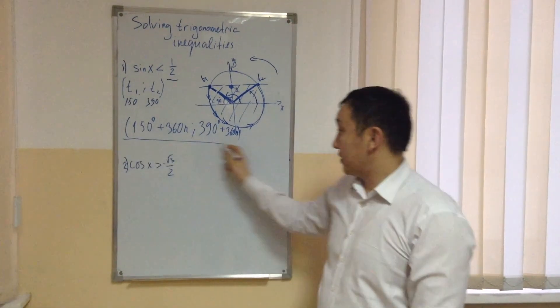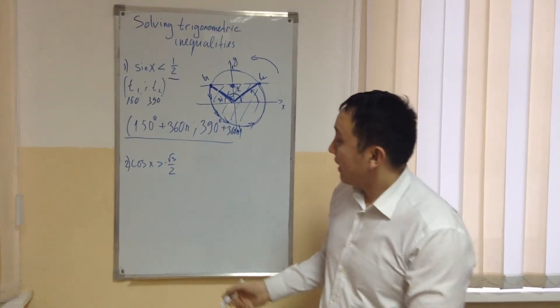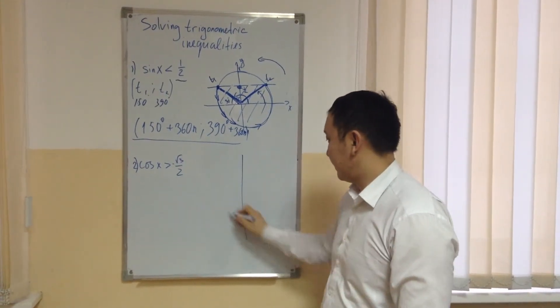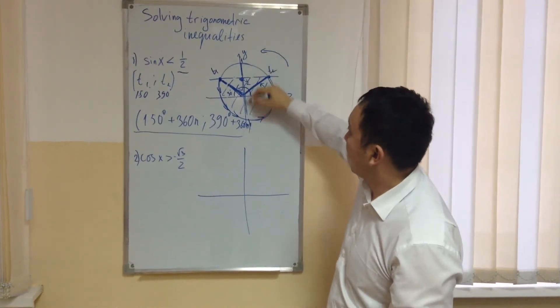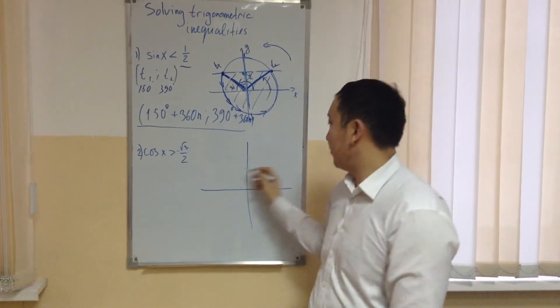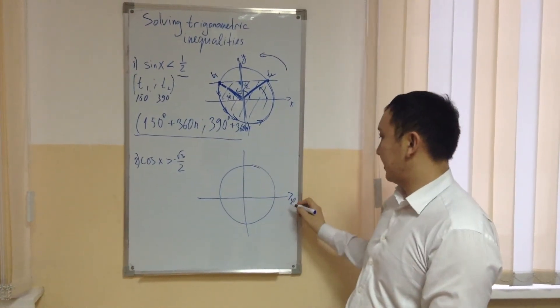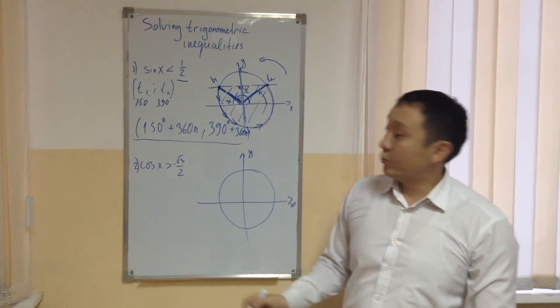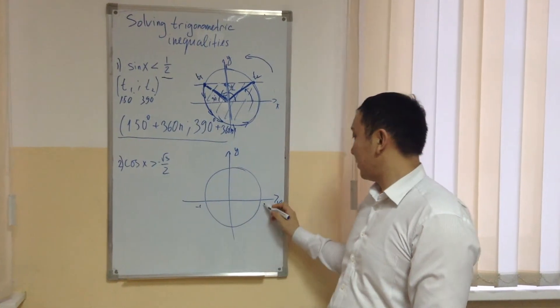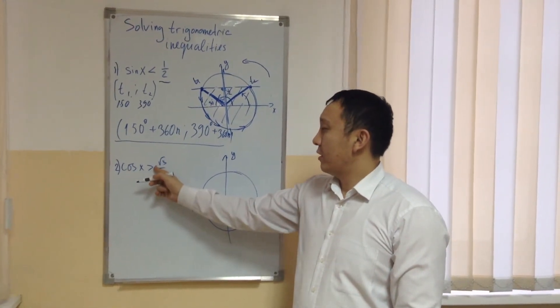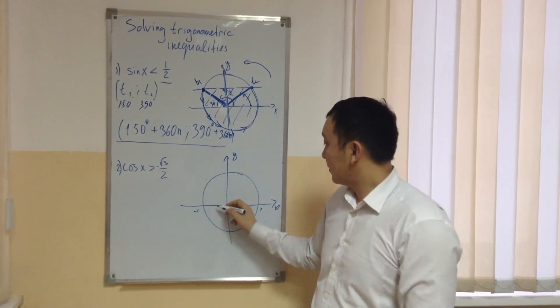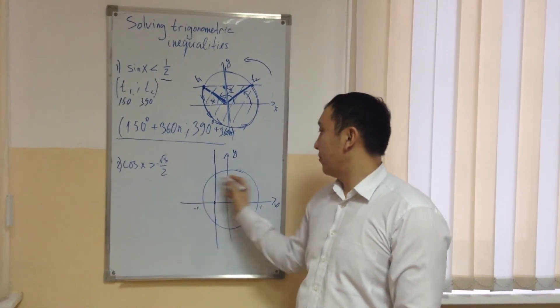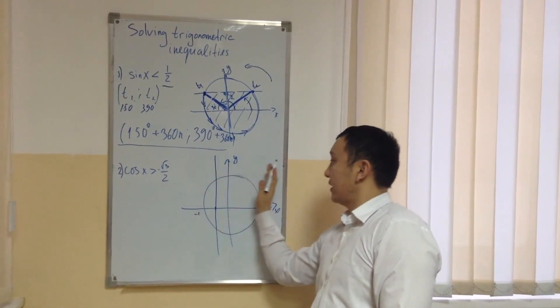So we finish with the task related with sin x. And the same I can say for cosine, with one difference, we have to change the axis. Before for sine we got the y axis as main, for cosine we have to choose x axis as the main axis. So cosine x more than minus square root of 3 over 2. This one is minus 1, this one is 1. So I have to choose minus square root of 3 over 2, somewhere here. So I have to draw a parallel line to y. And cosine x more than, I have to choose the right side of this circle.